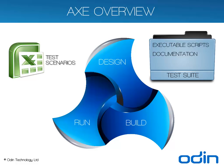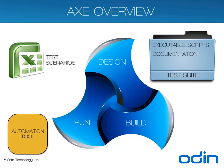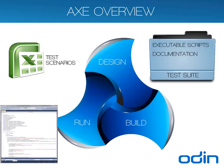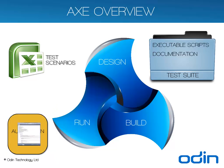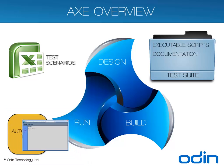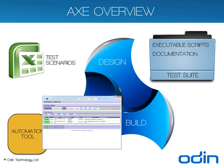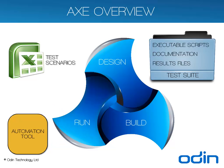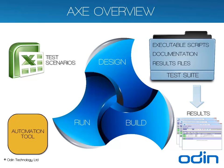In the Run phase, AXE will launch the appropriate automation tool and use it to execute the scripts that were built in the Build phase, carrying out the tests designed by the tester on the system under test. The Run phase will produce test execution results files and AXE will add these to the test suite. Once the results files have been added, testers can view these files to analyse the results of the test execution.